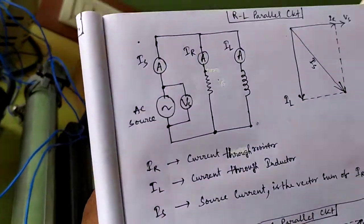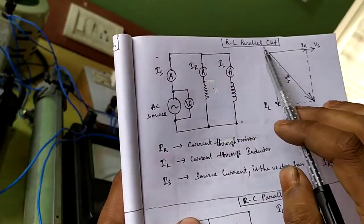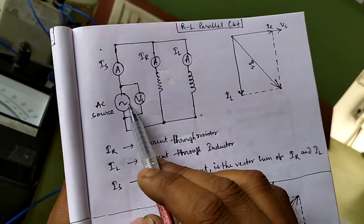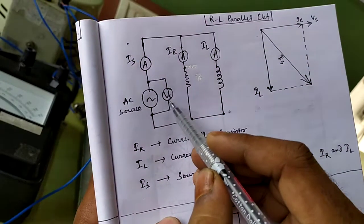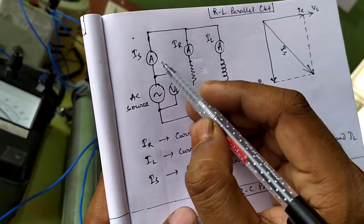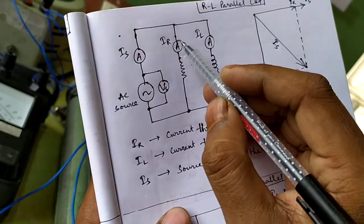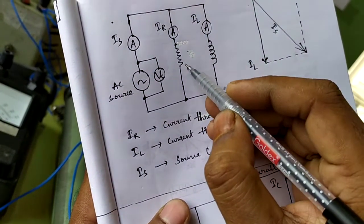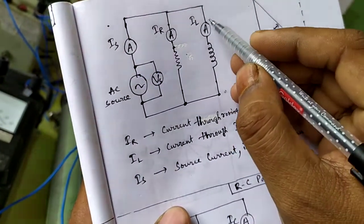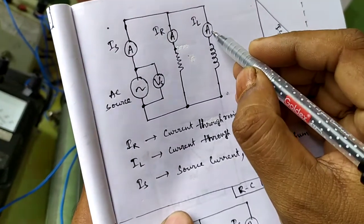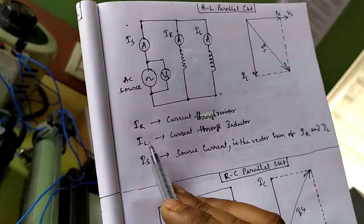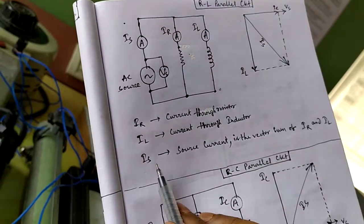Let's see the parallel circuit diagram. This is an RL parallel circuit with an AC source. We connect a voltmeter for measuring source voltage, denoted Vs, an ammeter for measuring the source current, an ammeter for measuring the resistor current denoted Ir, and another ammeter connected in series with the inductor L, denoted Il. Ir is the current through the resistor, Il is the current through the inductor.